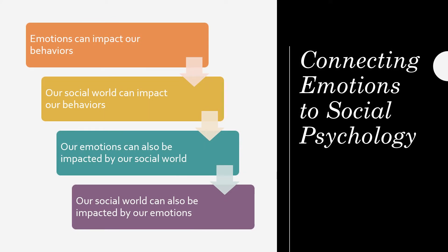Our emotions are usually a player in a lot of our behaviors, but our social world can also have an impact on who we are and what we're doing. Our emotions can actually change the world around us — if you're angry you might be doing something, and if you're happy you might be doing something else. Our social world can obviously also impact our emotions. Making sure that we focus on emotions being situational and moment-based is a key element that separates them from other concepts you might learn about in this and future classes.